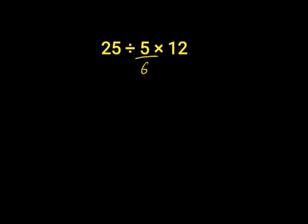First, we're going to solve 25 divided by 5 over 6 using KCF. K stands for keep, C stands for change, and F stands for flip.